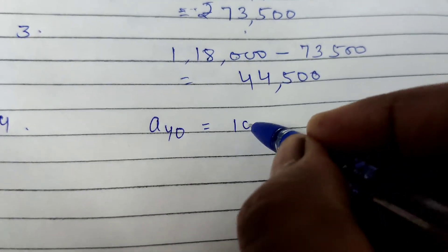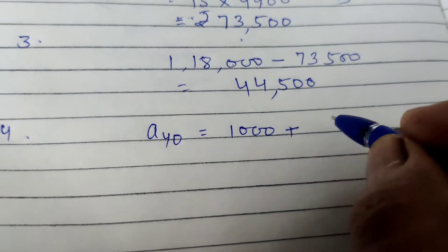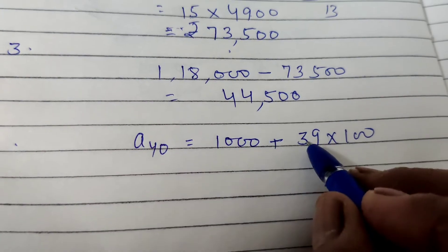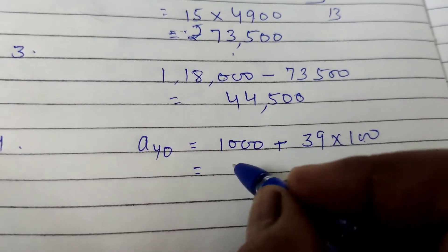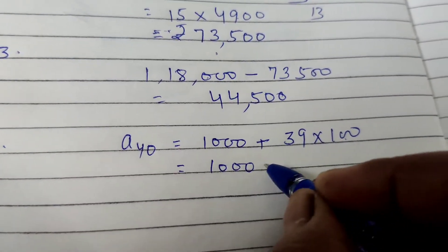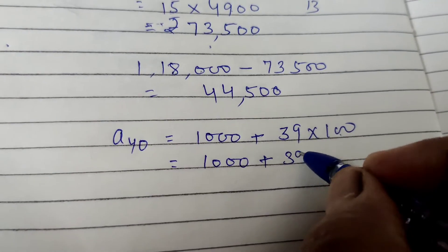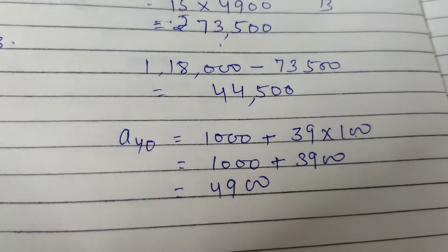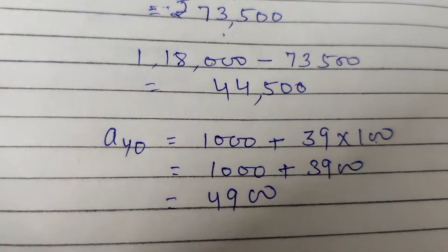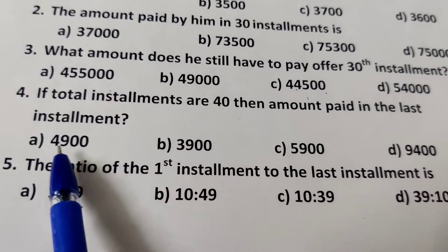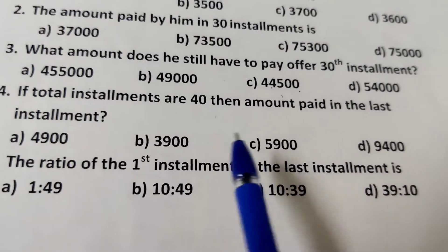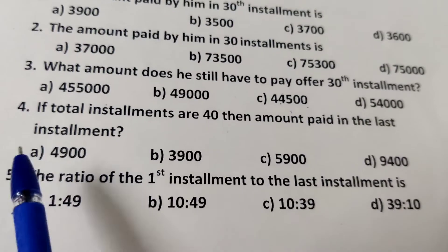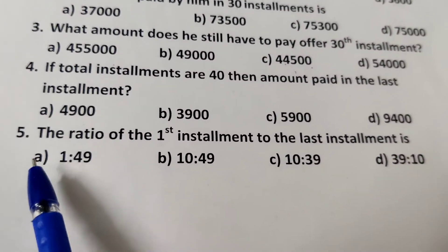A is 1000. N minus 1, that is 40 minus 1 is 39. D is 100. A plus N minus 1 into D. 1000 plus 39 into 100. 4900. This is the 40th installment. The answer is 4900.